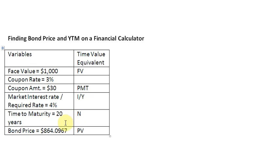And then we have an estimate of the bond price which is $864.0967 and in time value terms, this is going to be our present value.